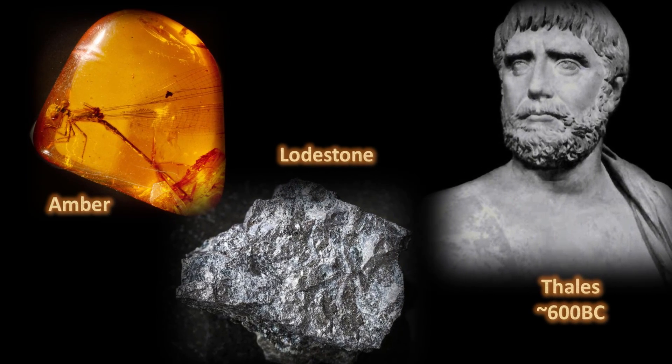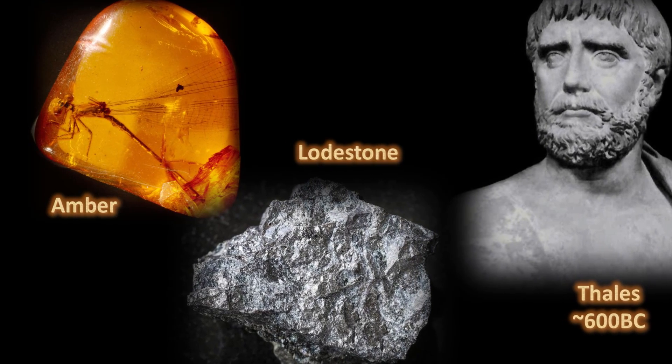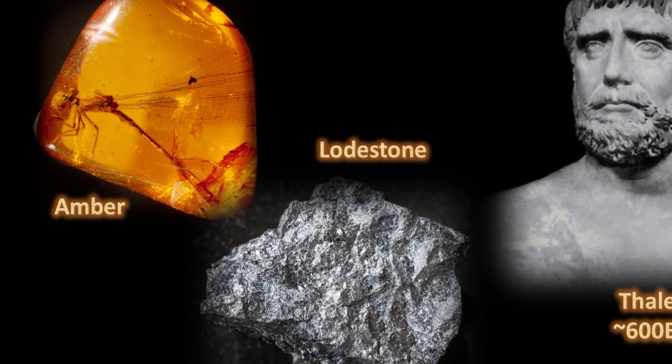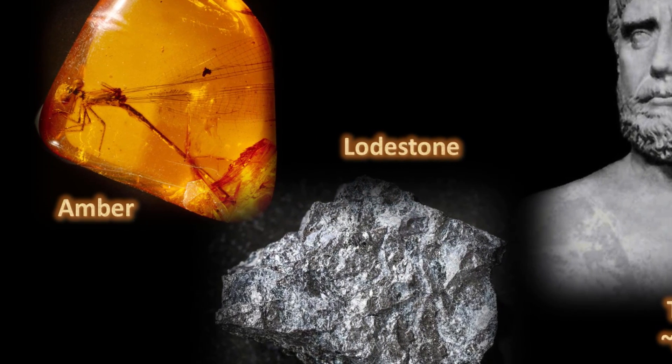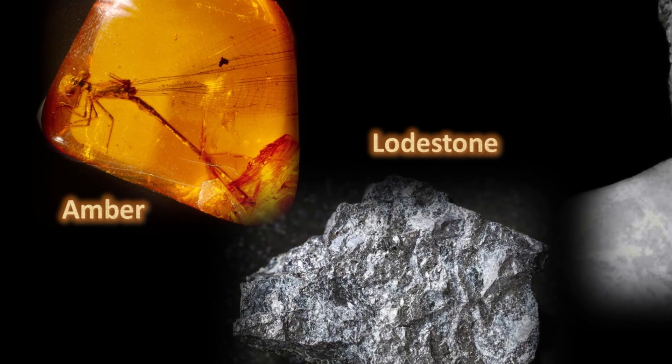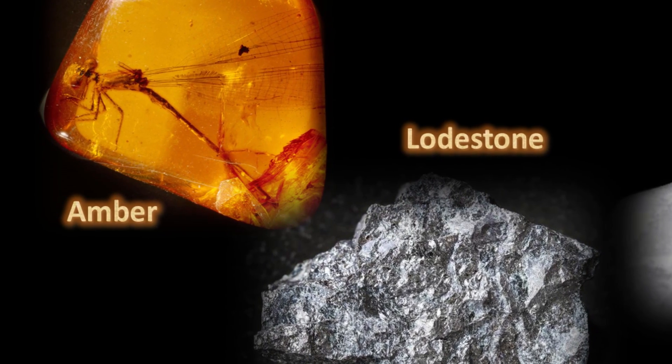Electricity and magnetism in various forms were known since ancient cultures. The first recorded description appeared around 600 BC by Thales of Miletus, who discovered that when amber was rubbed with animal fur, it would attract lightweight objects like feathers. In a separate experiment, he noticed that lodestone or magnetic iron ore can attract pieces of iron.